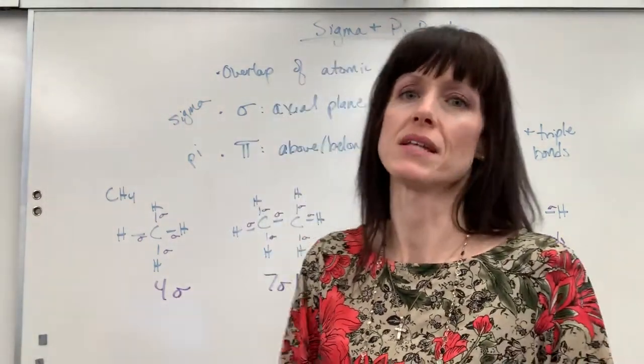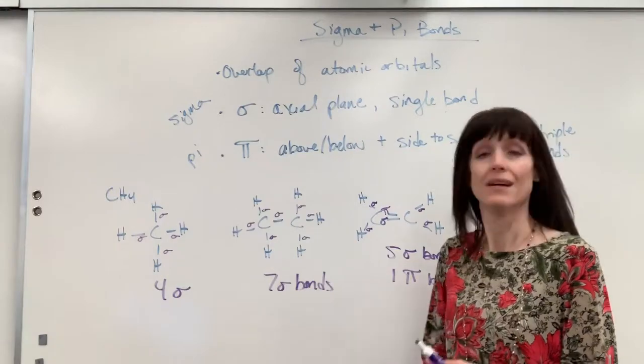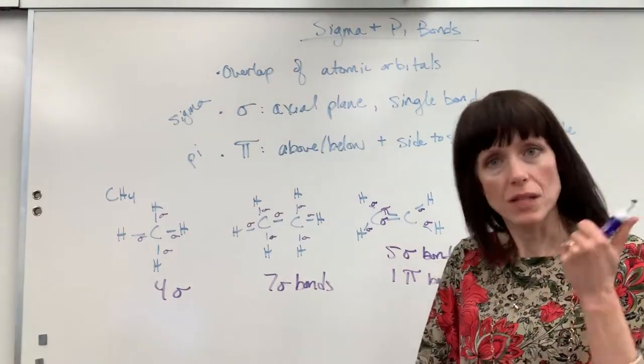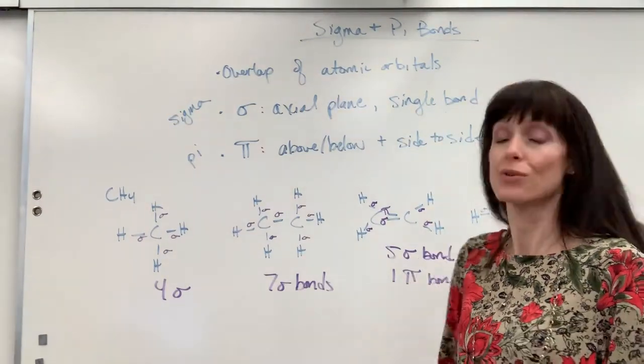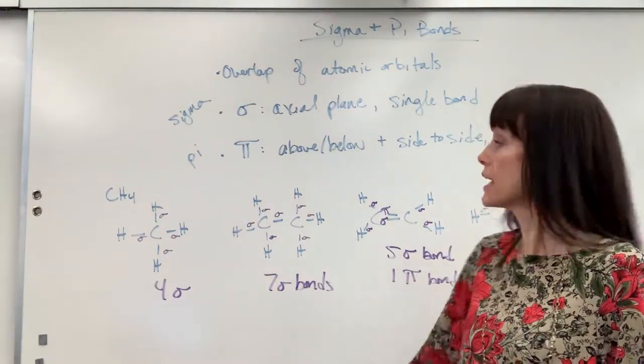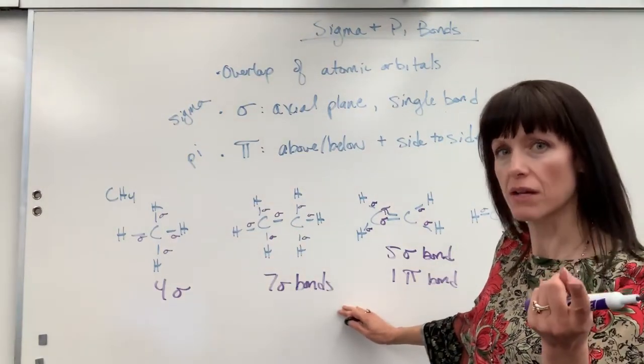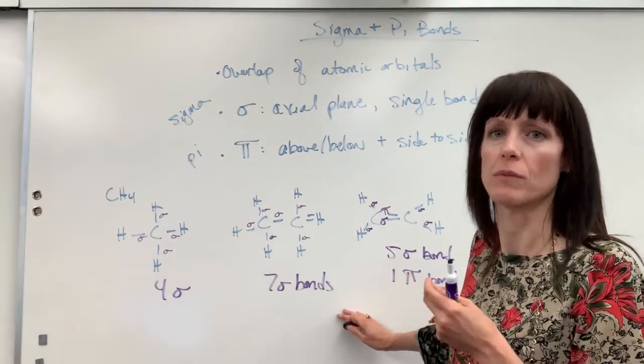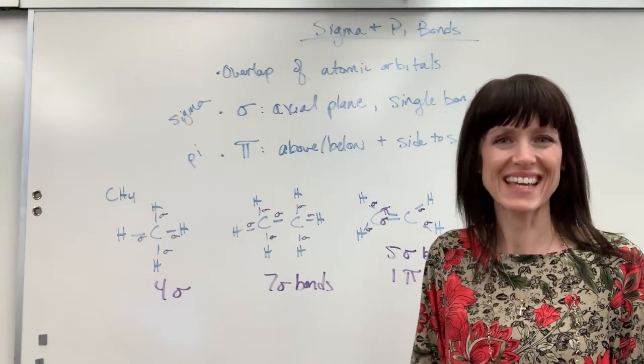And there you have it. You'll be asked how many pi, how many sigma bonds. Draw the Lewis dot structures and then just label, count up. Single bonds are always sigma, double, sigma and pi, triple, sigma and two pi. You'll do great on this. Have a really good day. If you need more information about bonding, check out the valence theory hybridization video and check out the VSEPR, valence electron pair repulsion. That will also help you. It's all in the same unit. All right, have a good day. Thanks.